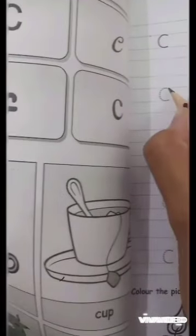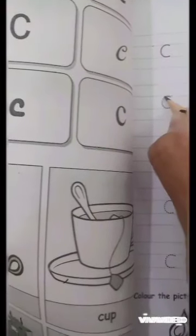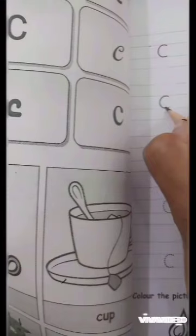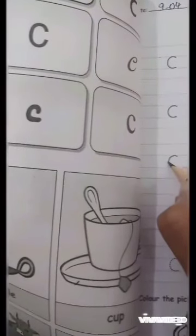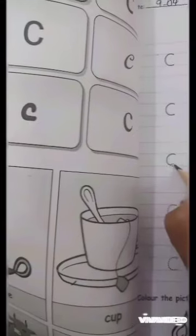So first of all ask your child to put the pencil here on the dots and make it round, round, round, round and write it like this. If your child doesn't write it on dots properly, then erase it and write it again.